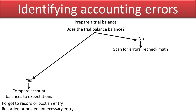For example, we can scan down the list of accounts and balances in the trial balance and look for errors. Sometimes the number just jumps out — it doesn't make sense and you can recognize it right off the bat.